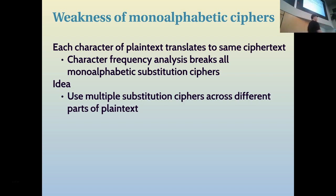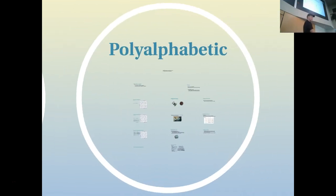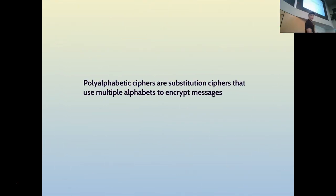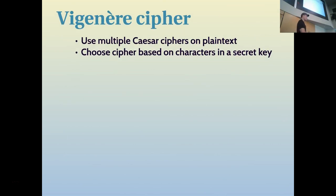The next step is, instead of using one alphabet for substitution, use a whole bunch of alphabets. With Enigma, it's going to use tens of thousands of alphabet sets — we'll get to that next. But we start with simple polyalphabetic ciphers: rather than a single substitution mapping, you use multiple substitution mappings. Polyalphabetic ciphers are just substitution ciphers with multiple alphabets, and the classic one is the Vigenère cipher.